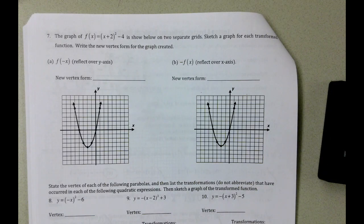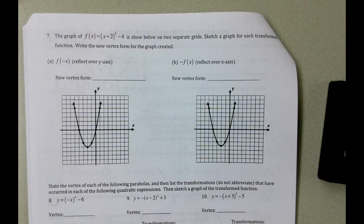The graph of f(x) = (x+2)² - 4 is shown below on two separate grids. Sketch a graph for each transformed function. Write the new vertex form of the graph created.